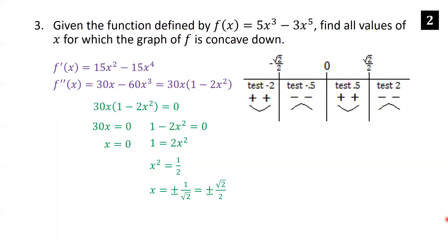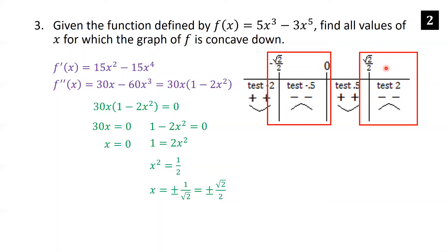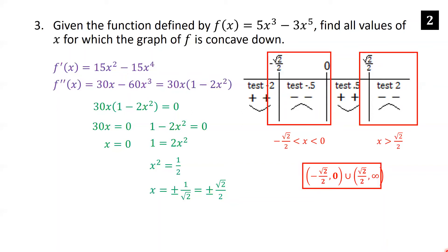So the function is concave down between negative root 2 over 2 and 0, and also for x greater than root 2 over 2. In interval notation, this is the open interval from negative root 2 over 2 to 0, together with the open interval from root 2 over 2 to infinity — that is the set of all x values where the function is concave down.